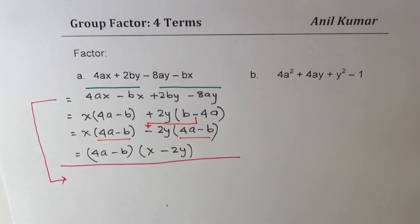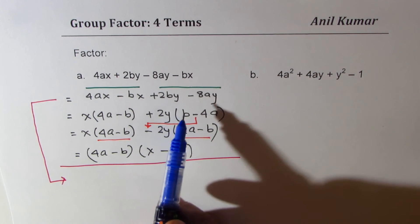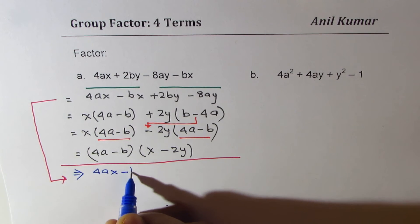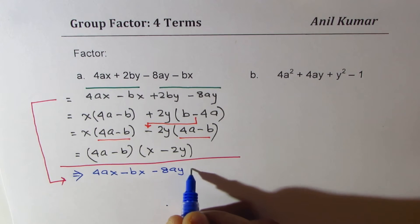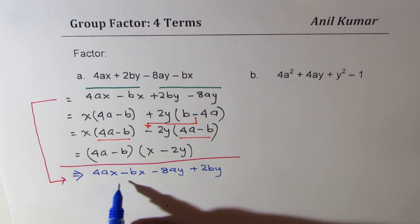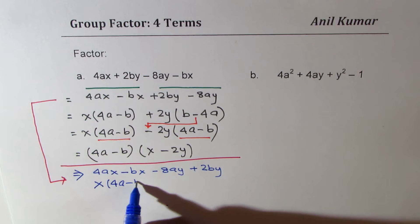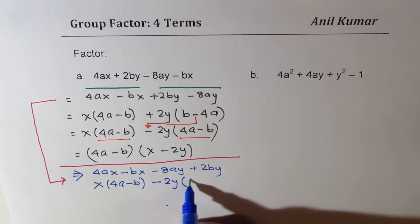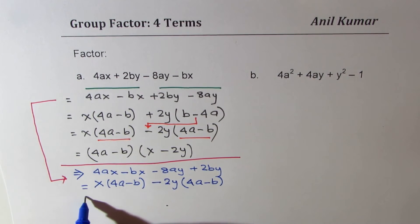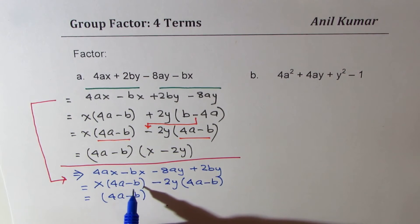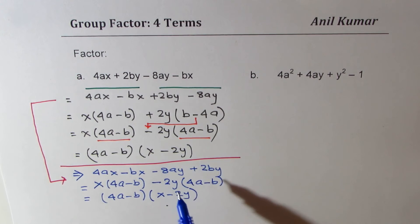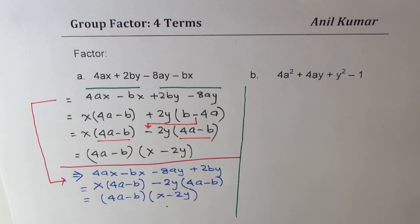In method 2, we rearrange at this stage. We write it as 4ax minus bx minus 8ay plus 2by. Factoring x from the first two terms gives 4a minus b. Factoring 2y from the last two terms also gives 4a minus b. Now we can directly write 4a minus b as a common factor, with x minus 2y as the other — simplifying our solution with fewer steps. Rearranging in a proper way helps reduce steps.